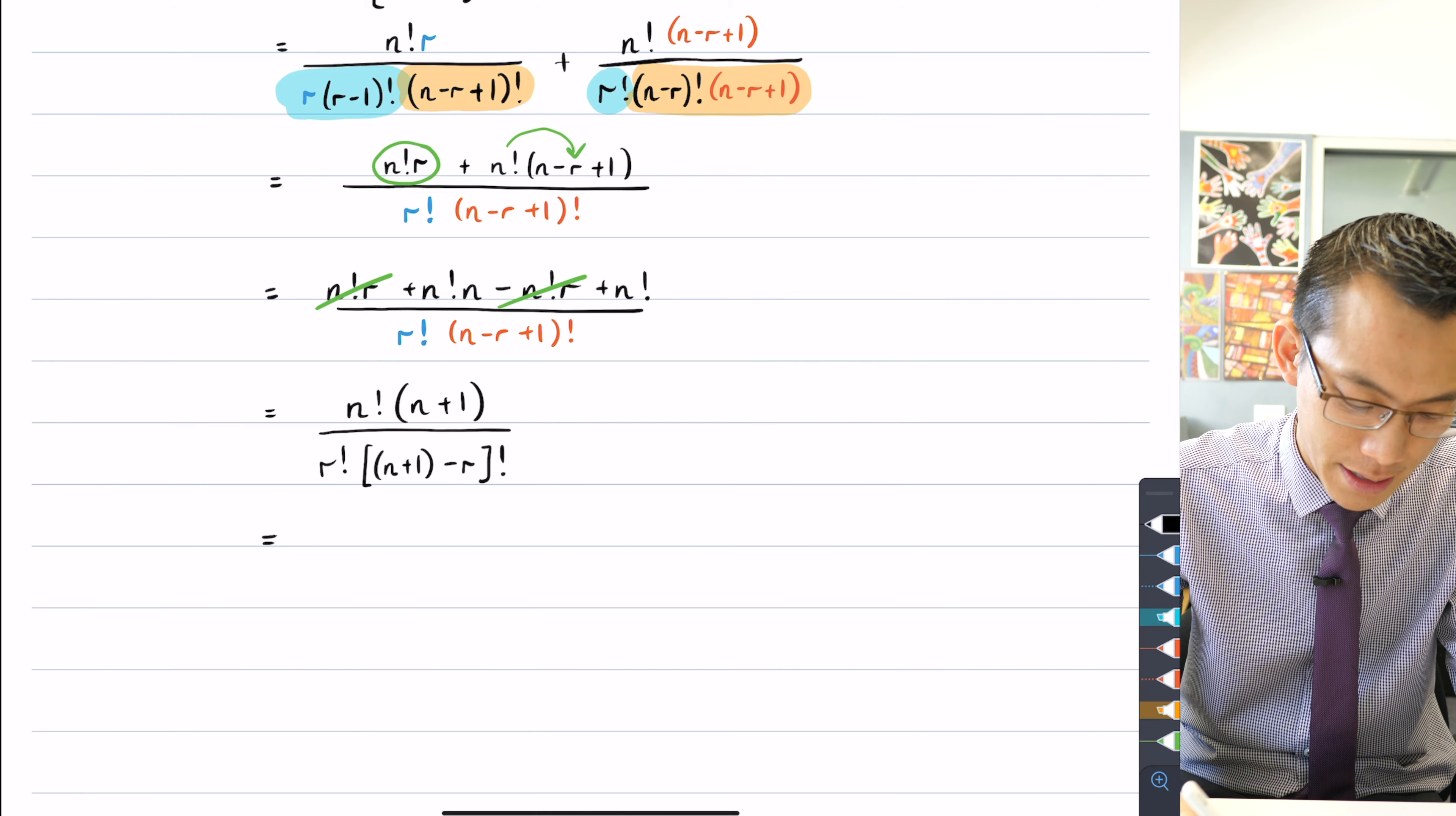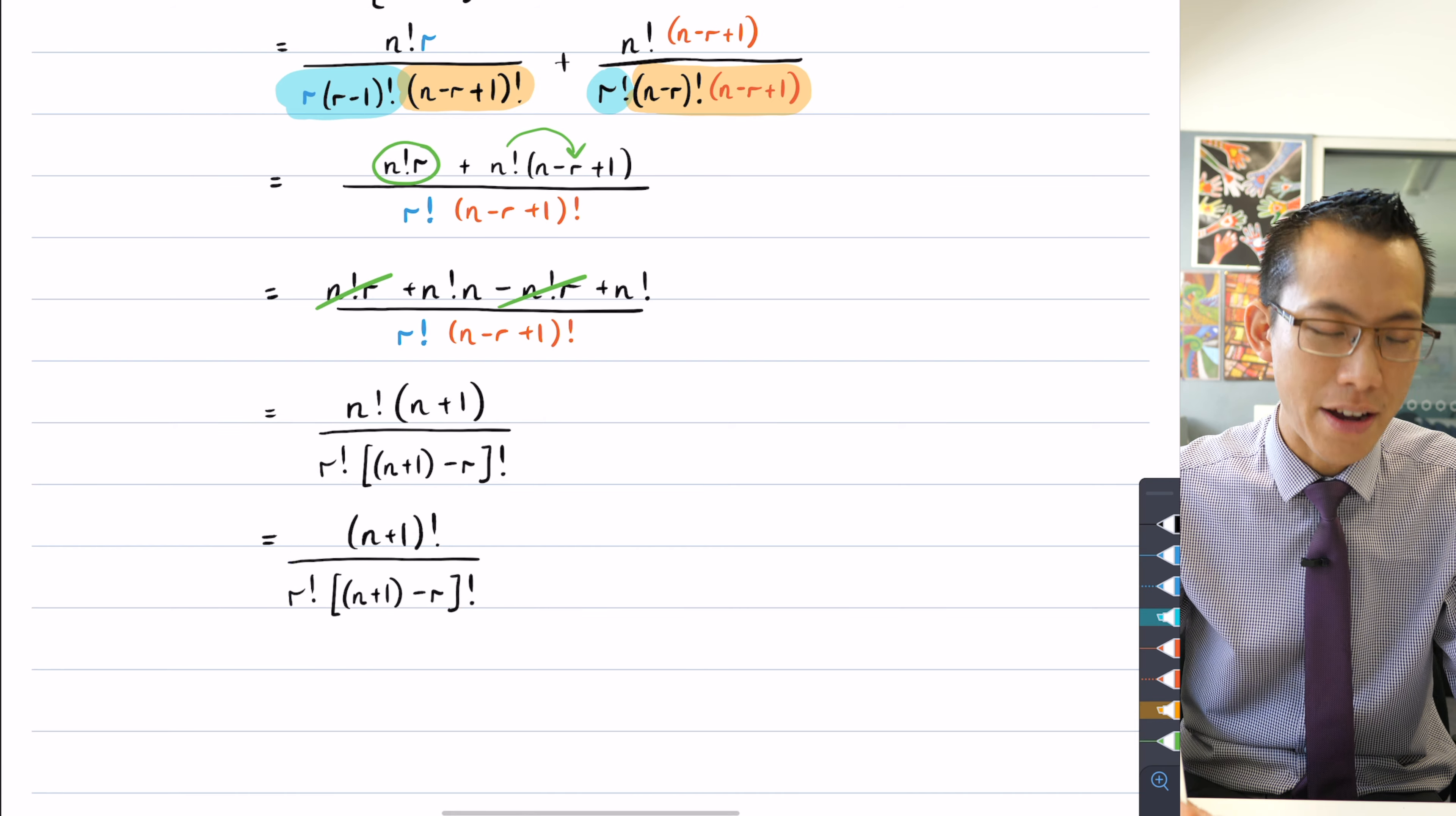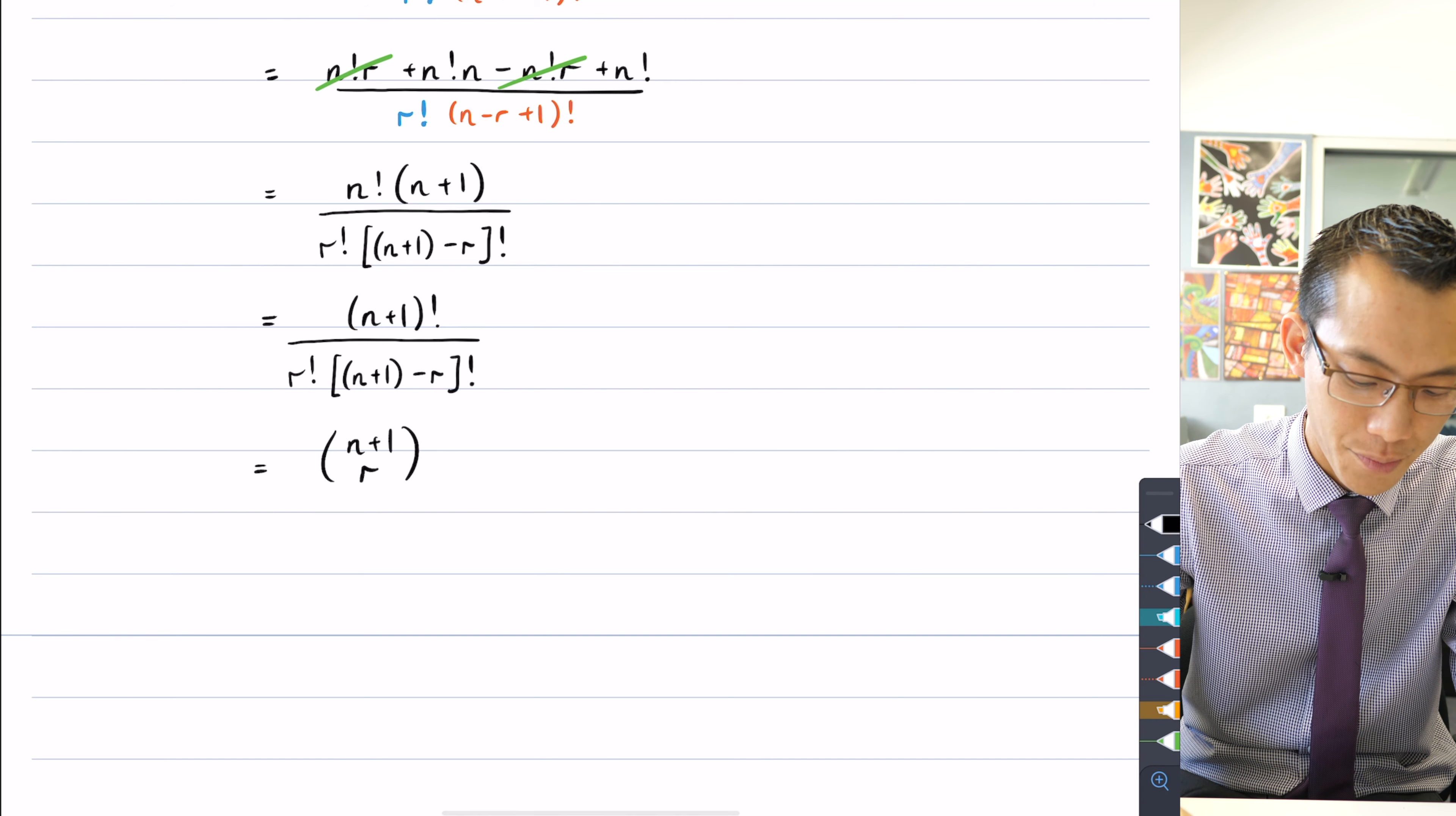So what have I got on the numerator? It's n plus 1 factorial. I don't need to change anything else on the denominator. This is the binomial coefficient I was after. This is n plus 1 choose r as required.